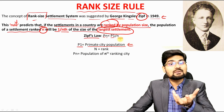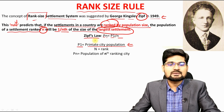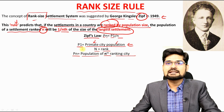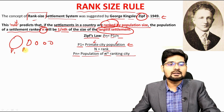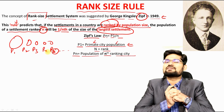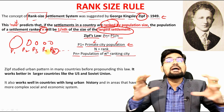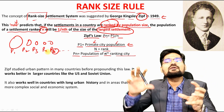P1 is the primate city population — the biggest, single largest city in a country or region. N is the rank, and Pn is the population of the nth ranking city. So if cities are ordered P1, P2, P3, P4, P5 and so on, this rule helps us compare the primate city with a city of any given rank n.